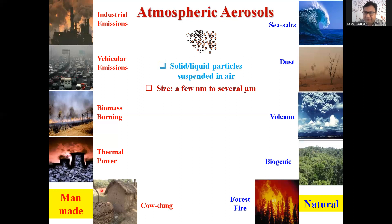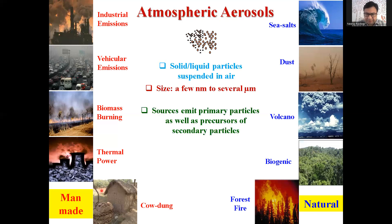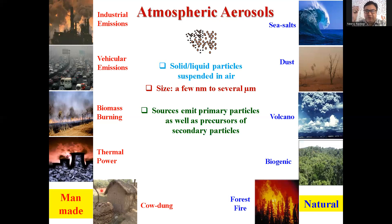The size of aerosols, as we have seen, can vary from a few nanometers up to several micrometers, depending upon the source they are coming from. These sources emit particles as well as precursors of particles. If a particle is coming directly as a particle into the atmosphere, it is called a primary particle. If sources emit gases that then convert into particles, those are called secondary particles. For example, thermal power plants and many industries emit sulfur dioxide, and vehicles emit NOx. Those convert into sulfate or nitrate particles — secondary particles. Similarly, many sources emit VOCs — volatile organic carbon — which converts into organic carbon, so that is secondary organic carbon.